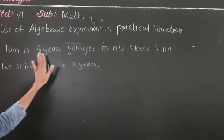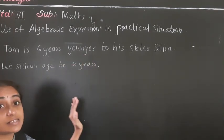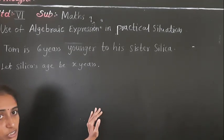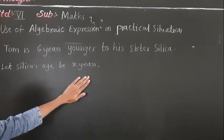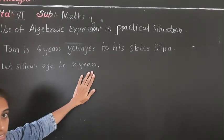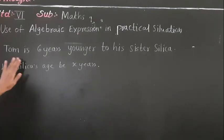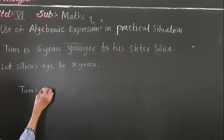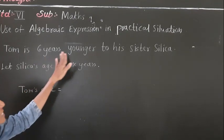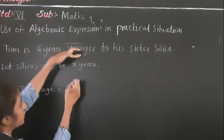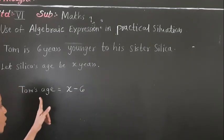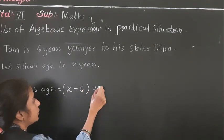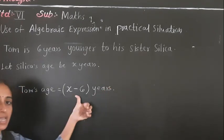Now, Tom is 6 years younger to his sister Sirika. So what expression do we write here? Sirika's age is X years — we got Sirika's age as X, we assume it is X years. So we have to find the age of Tom. Tom's age: Tom is 6 years younger, and Sirika's age is X, so X minus 6. The expression is X minus 6 years.